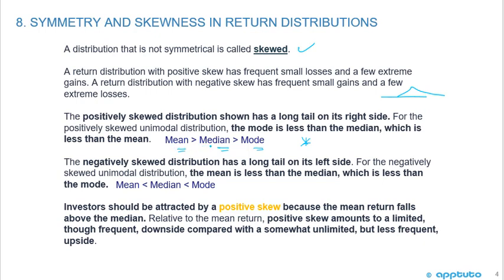A way to memorize this is that it's in alphabetical order: MEA, MED, MO. If it's positively skewed — long tail on the right-hand side — the arrows point to the right. For the negatively skewed unimodal distribution, which has a long tail on the left-hand side, the mean is less than the median, which is less than the mode. Same alphabetical order — mean, median, mode — but the arrows point to the left.